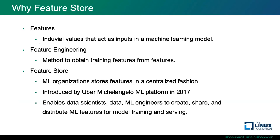Let's start with some general definition of what a Feature is. Features are individual values that act as inputs in a machine learning model to predict an outcome. Features may need to be computed to become training features — these engineered features are the ones used for training the models.